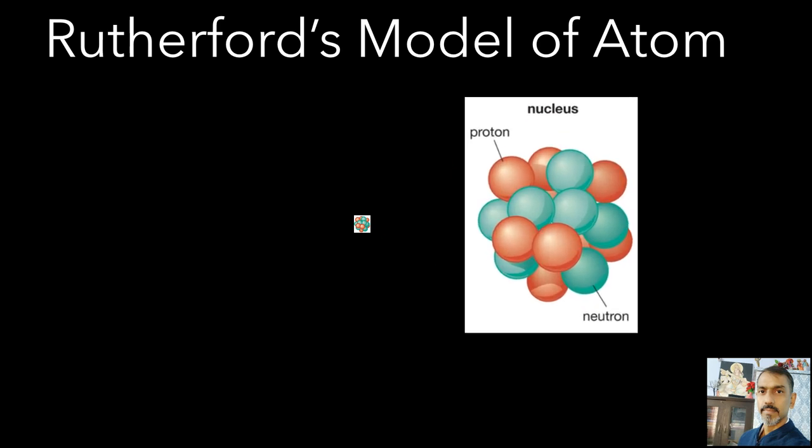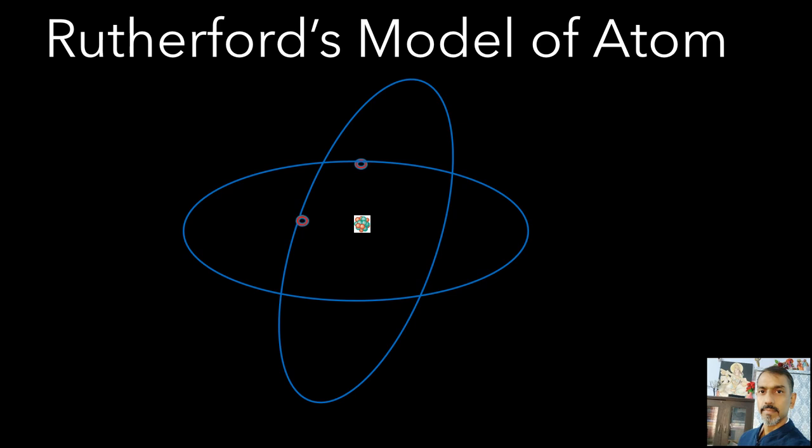For the stability of the atom, he assumed that electrons revolve around a fixed positively charged central nucleus in different orbits, just like the planets revolve around the sun. The electrostatic attraction between an electron and nucleus provides the necessary centripetal acceleration. However, the orbits of revolution of the electrons are circular.